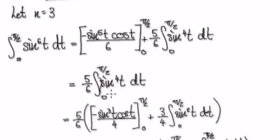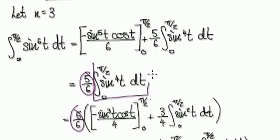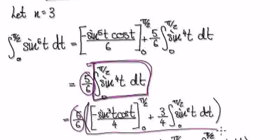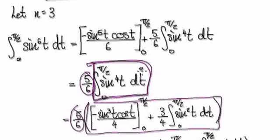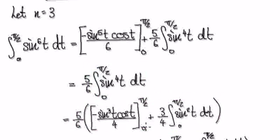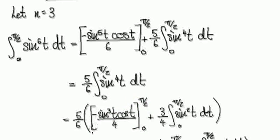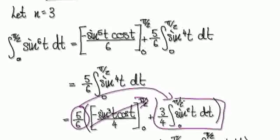Applying the reduction formula again gives us this whole expression. And again, when you evaluate it from 0 to pi over 2, this whole term disappears — it is 0. So that leaves just this times this thing here.